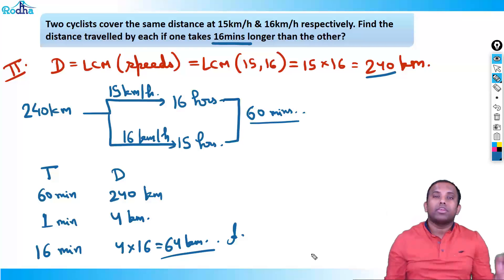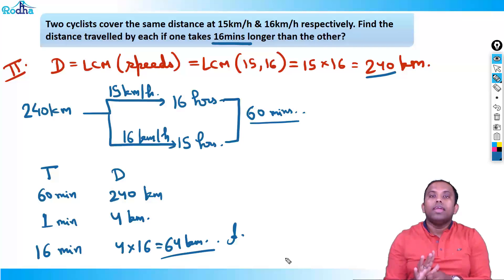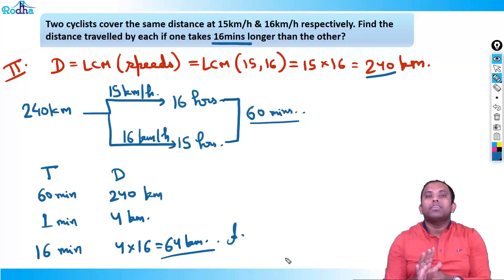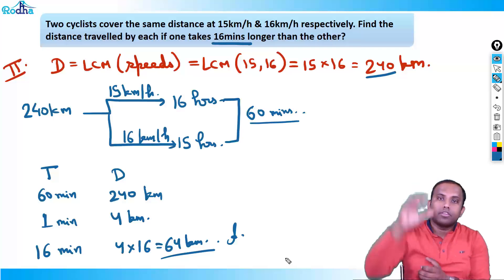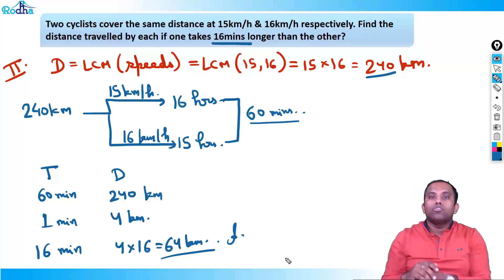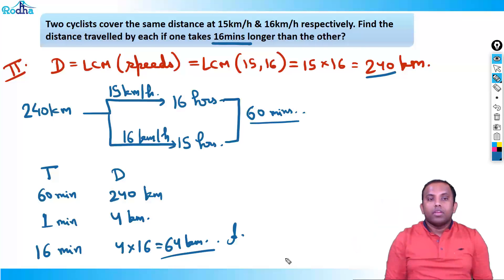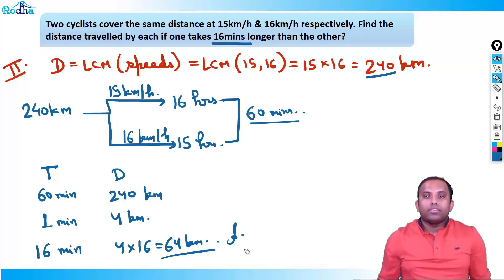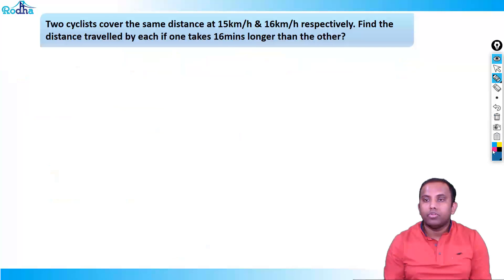Both methods give 64 kilometers. This method — assuming distance as LCM of the speeds so that times come out as integers — is very useful. We'll use it in many places.